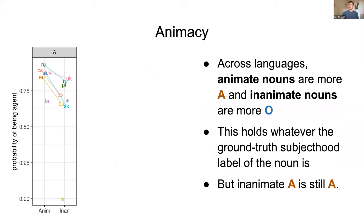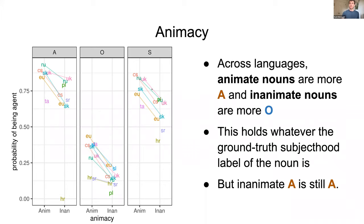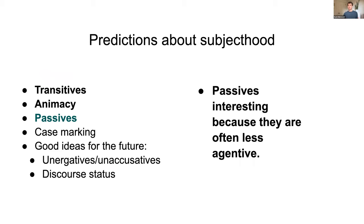Looking at animacy first: we examine the probability that the classifier assigns a token as an agent based on whether it's animate or inanimate. Animate nouns tend, in both subject and object roles, to get accurate classification, but animate nouns get assigned higher probabilities of being a subject. Similarly, inanimate objects get assigned higher probabilities of being classified as objects. Intransitive subjects fall somewhere in between, but the same pattern holds: the more animate something is, the more likely it is to be called the subject by the classifier.